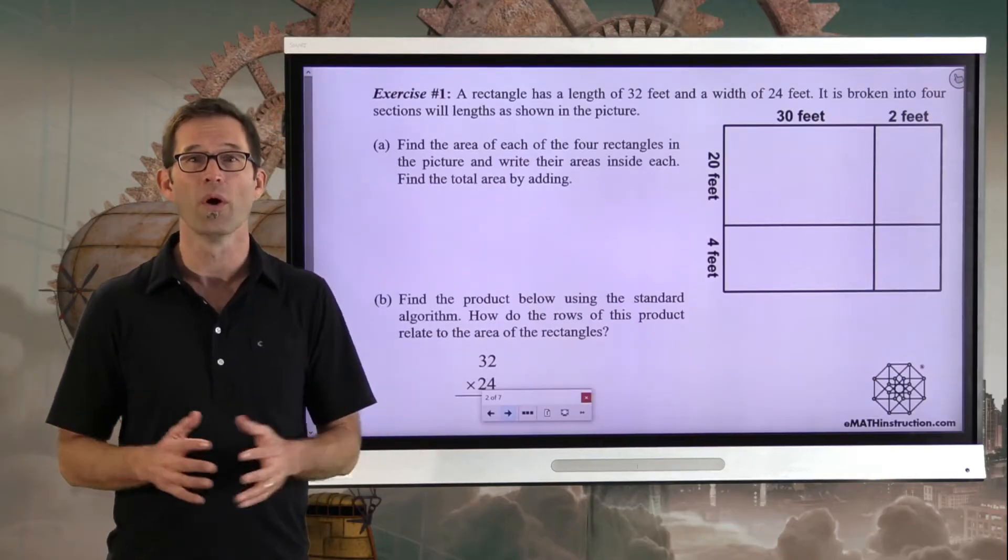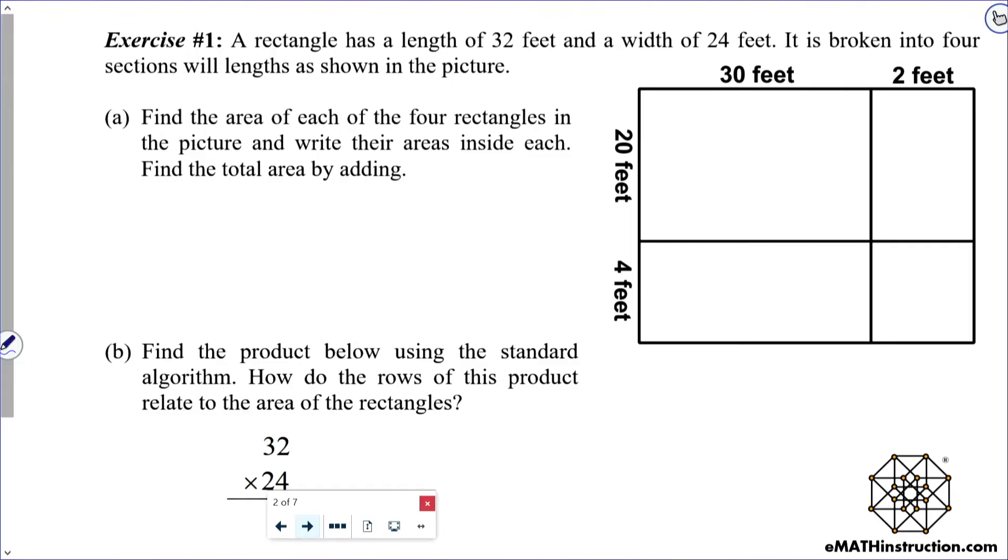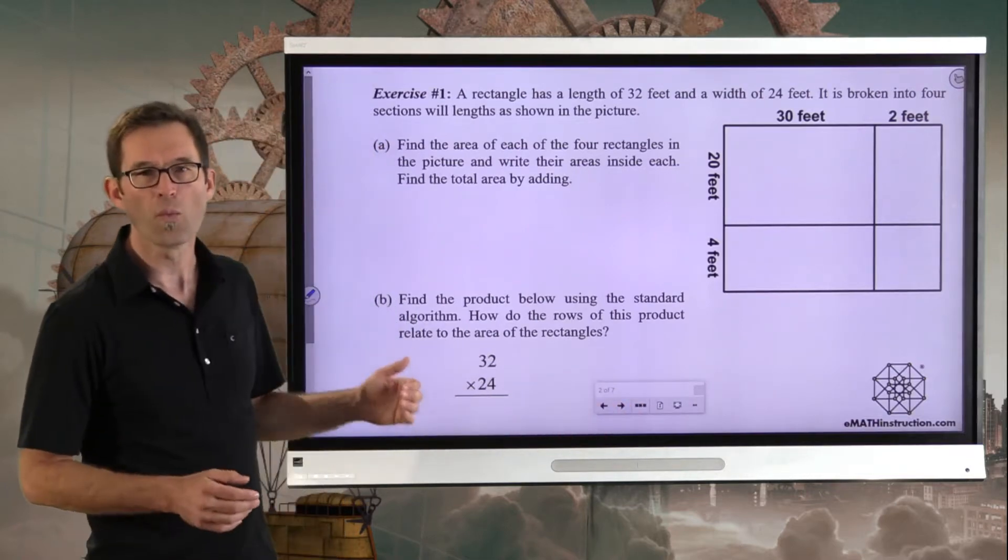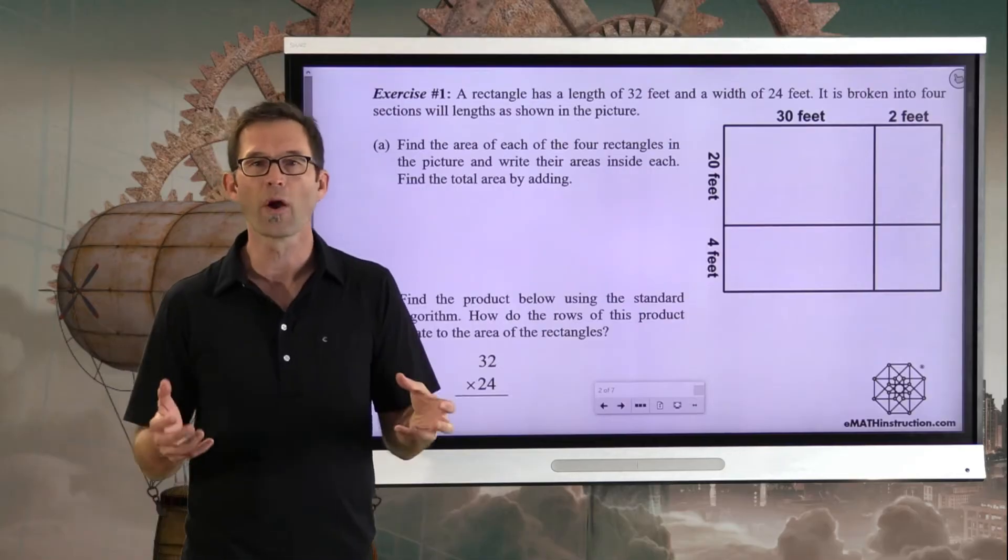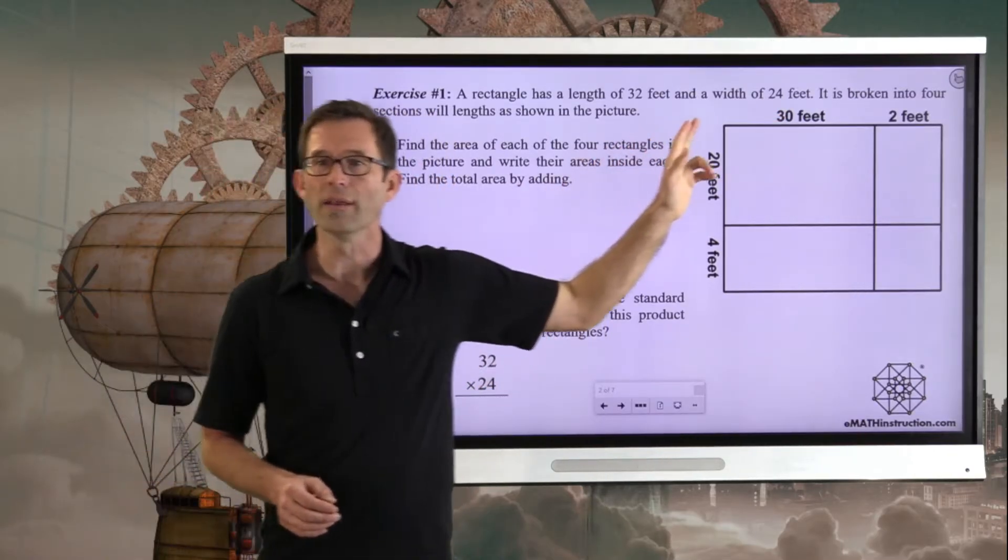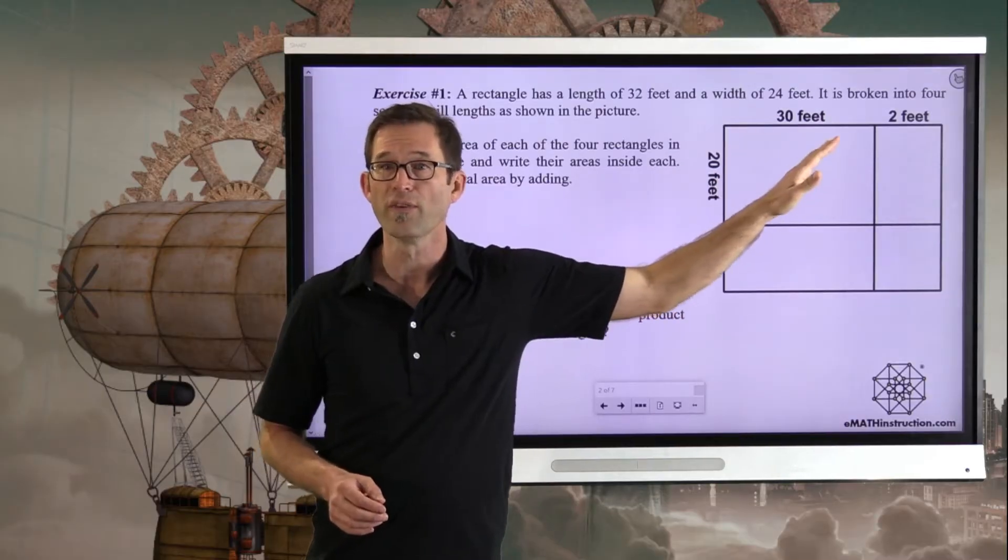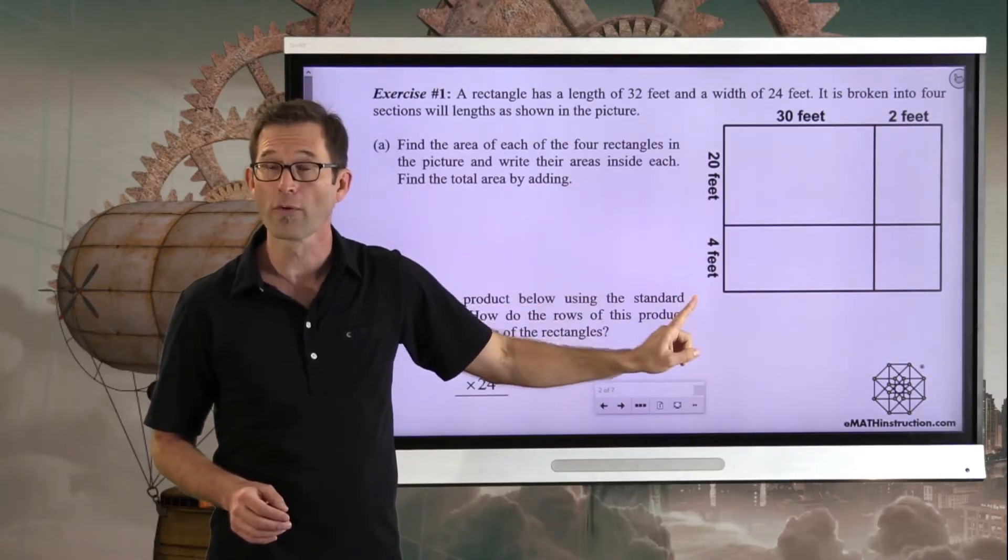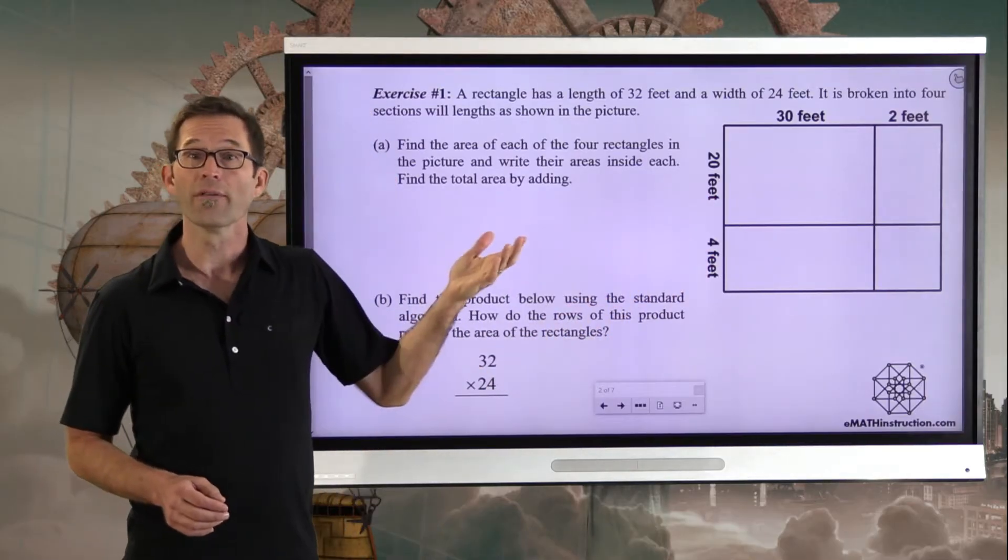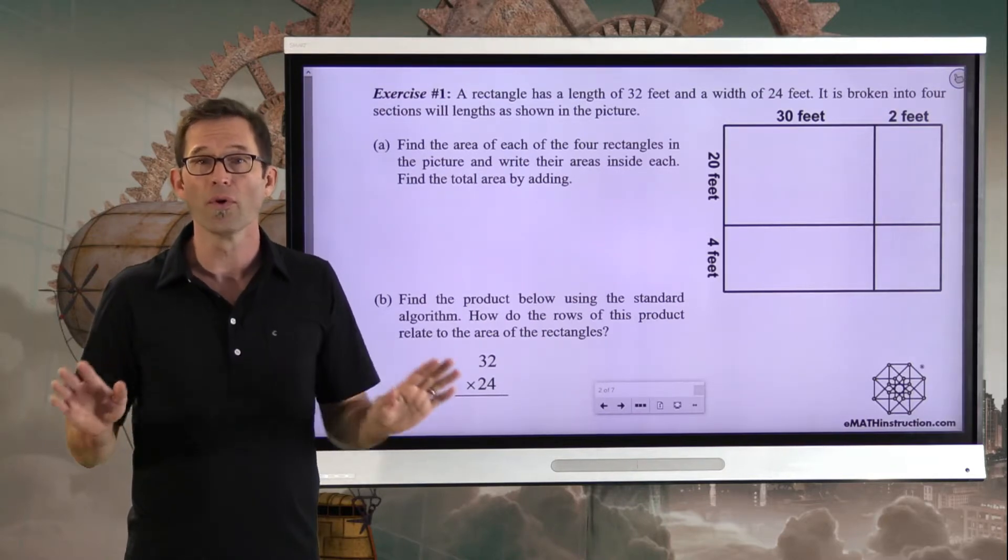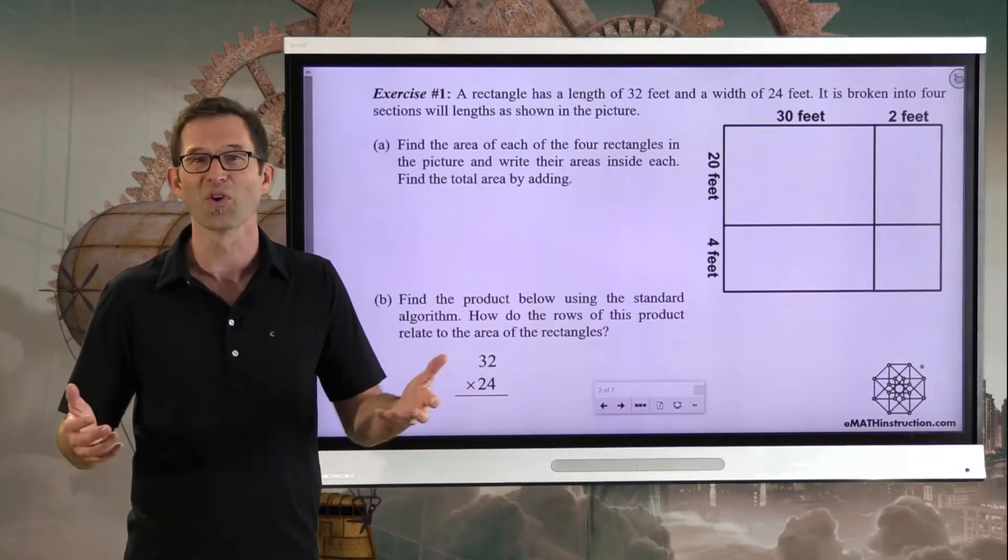Exercise number one. A rectangle has a length of 32 feet and a width of 24 feet. It is broken into four sections with lengths as shown in the picture. Ultimately speaking, we want to find the area of this overall rectangle, how many square feet fall inside of it, and we know that's going to be 32 times 24. But what we've done is taken the 32 foot length and broken it into 30 feet and 2 feet, and the 24 foot width and broken it into 20 feet and 4 feet.